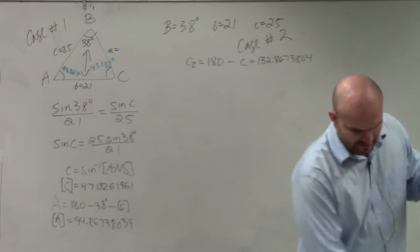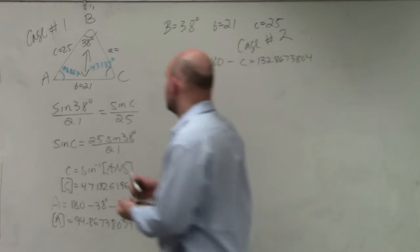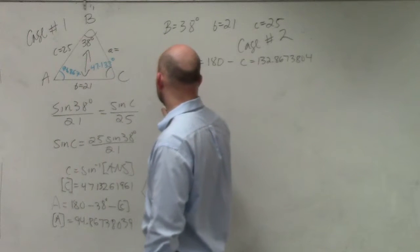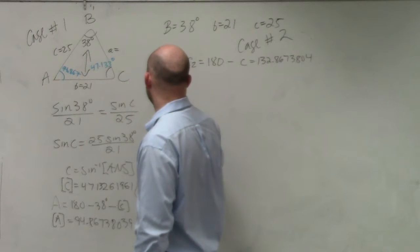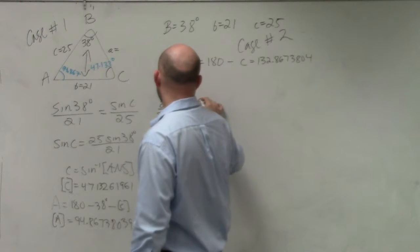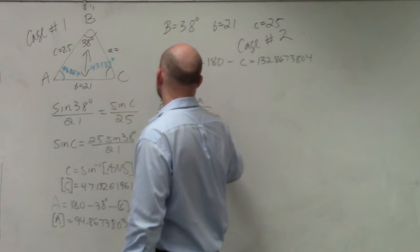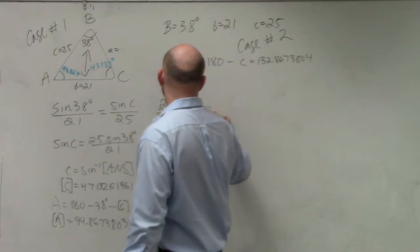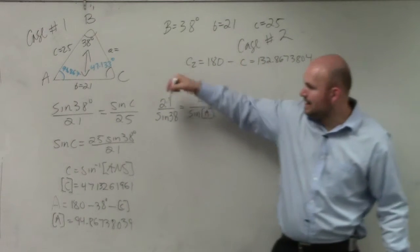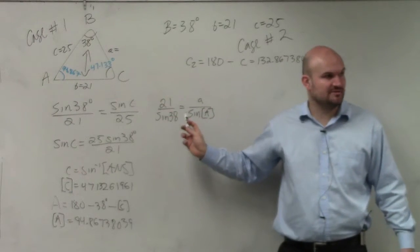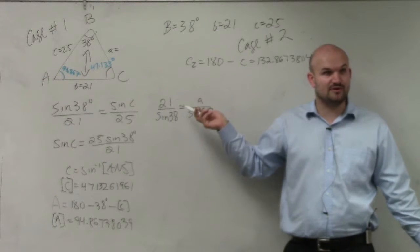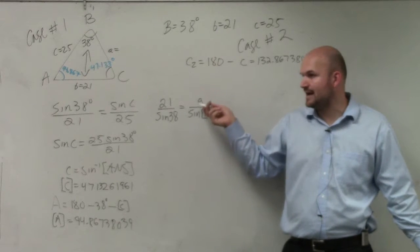is why I stored this in my calculator is because when I do my ratio, now I'm solving for a. So what I'm going to do is I'm going to flip this 21 over the sine of 38 equals a over the sine of a. Does everybody see how I flipped my ratios? Instead of doing this ratio, I'm using this ratio. The reason why that's helpful is because now I can solve for a in the numerator.